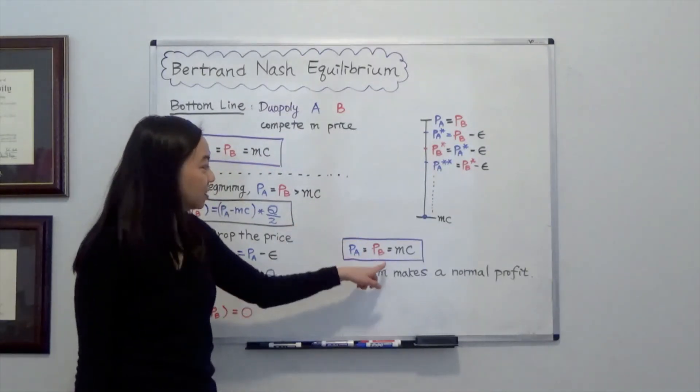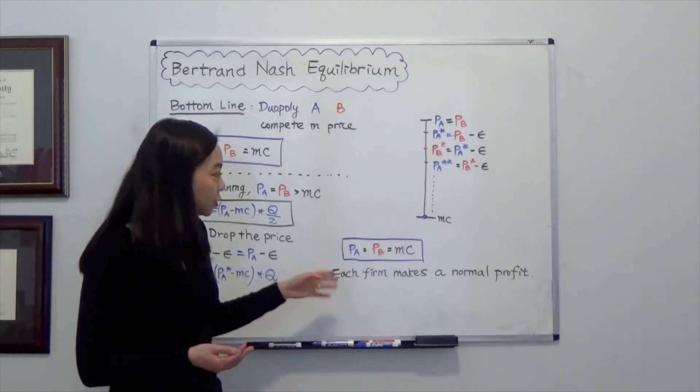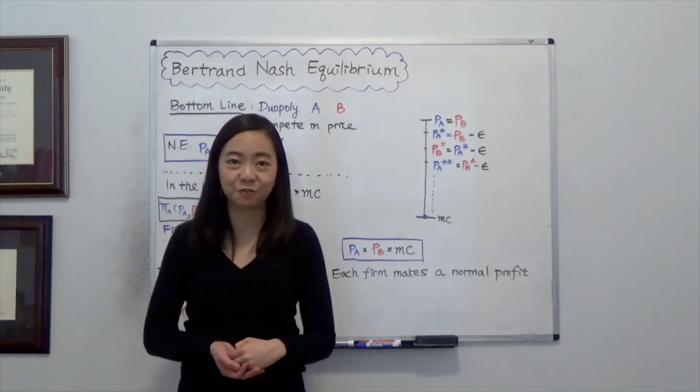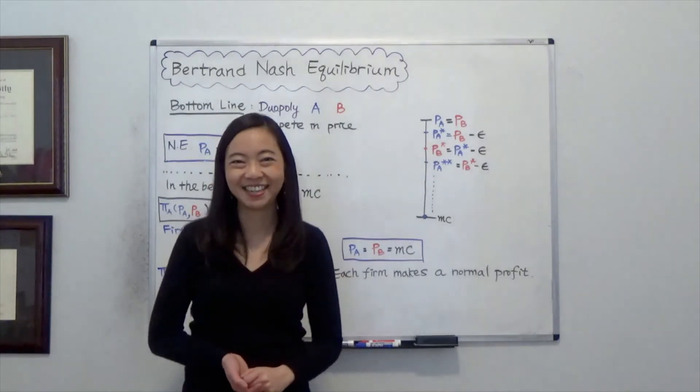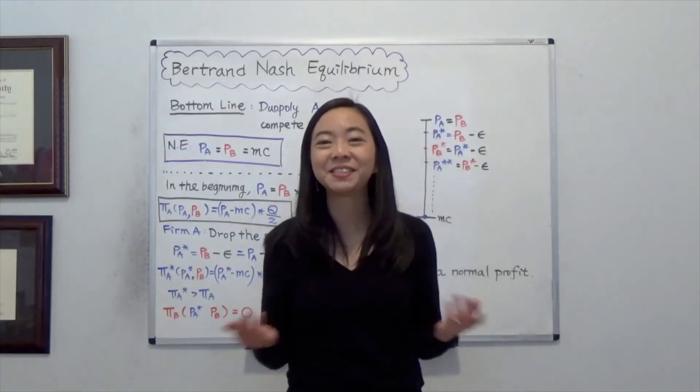So eventually our Nash equilibrium is this, PA equals PB equals the marginal cost. So each firm is making a normal profit or a zero economic profit. So this is our Bertrand Nash equilibrium. I hope this helps. I'll see you next time.